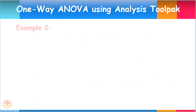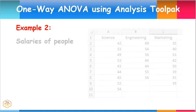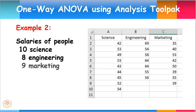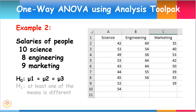Let's have another example. In this case, we will use the salaries of people with various degrees: 10 in science, 8 in engineering, and 9 in marketing. The null hypothesis here states that all the means of salaries are equal, while the alternate hypothesis says that at least one of the means is different.